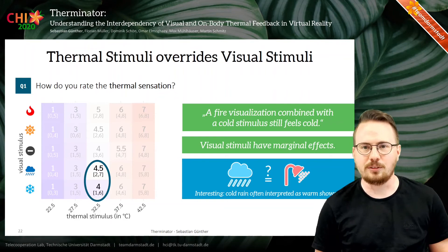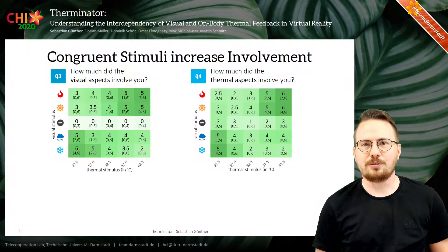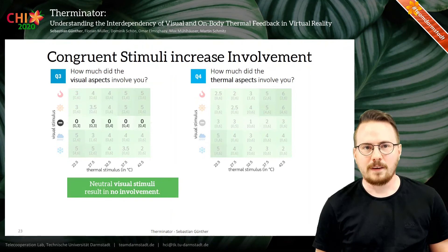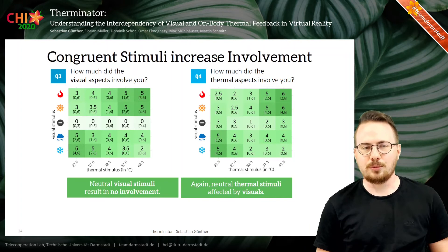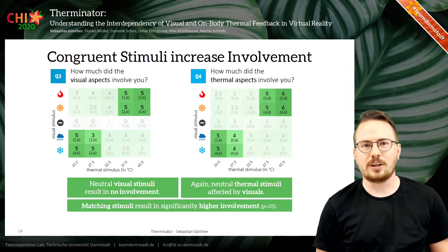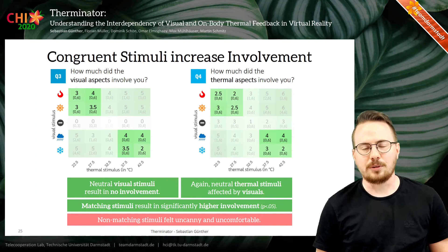Regarding involvement, we could identify that concurrent stimuli increased involvement. A neutral visual stimulus — so no visualization at all — resulted in no involvement, as expected. However, similar to before, a neutral thermal stimulus is affected by the shown visualizations. Taking a closer look at matching stimuli, which we can find at the lower left and upper right parts of each graph, we can clearly see significantly higher involvement ratings compared to non-matching stimuli, which were often described as uncanny or even uncomfortable.